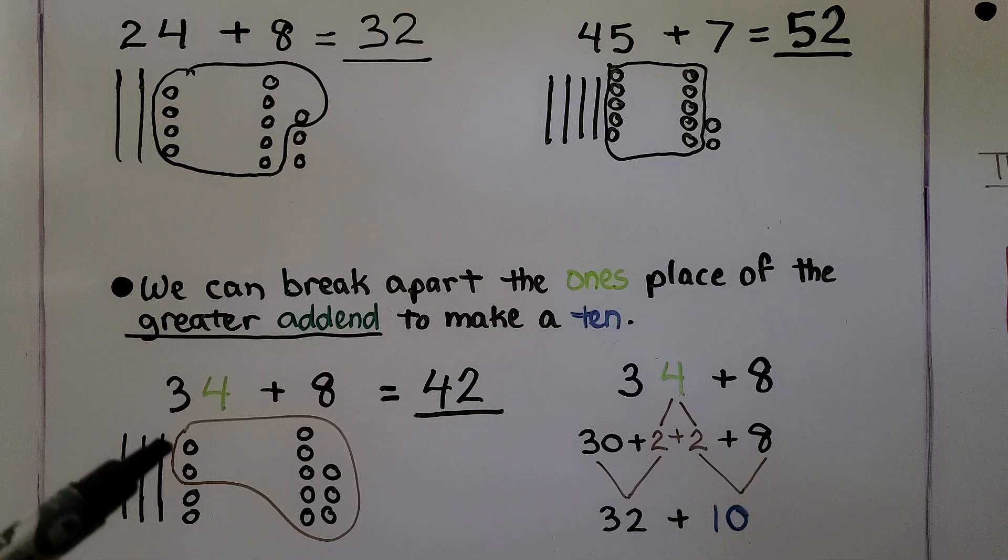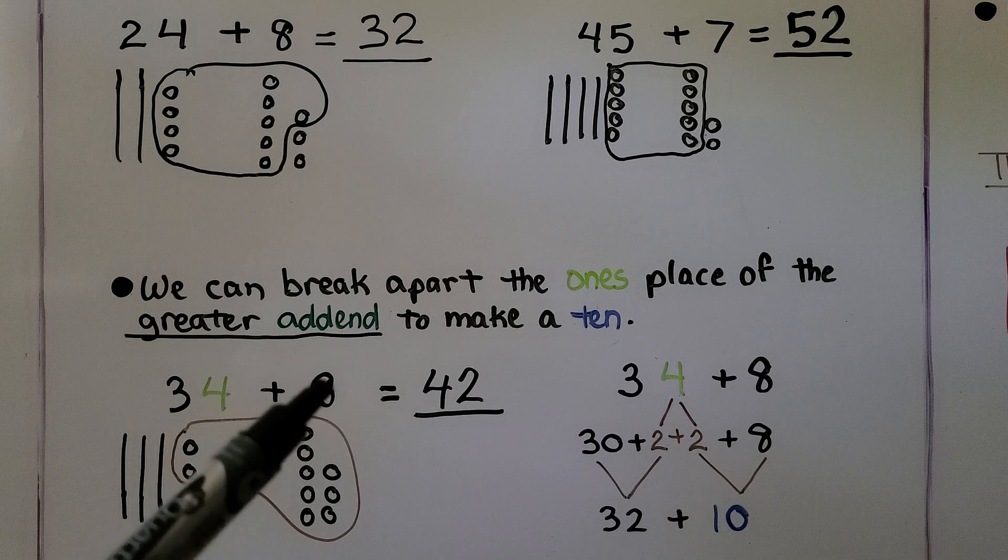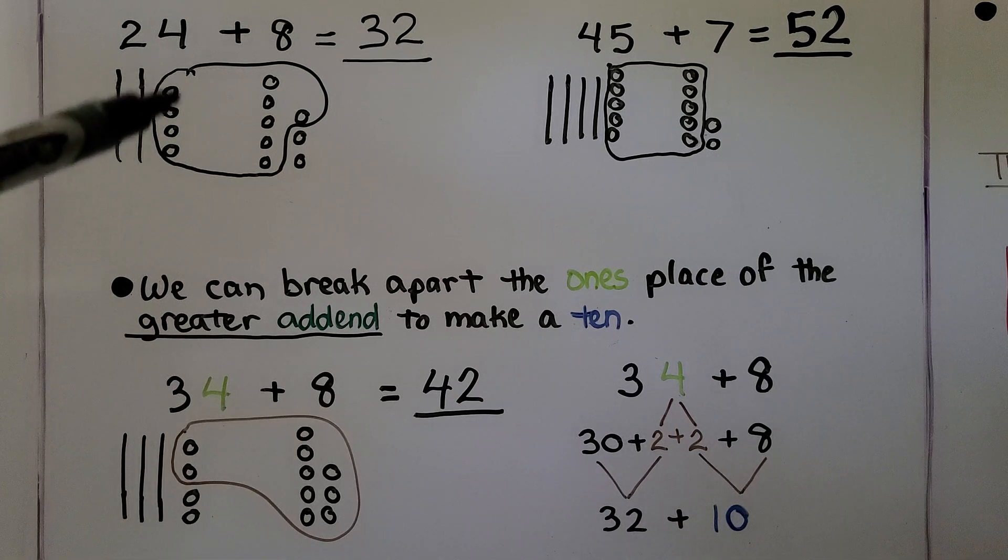Then we add the 3 tens to 1 as 32 and add the other ten. And 32 plus 10 is 42. So we can make a ten from these ones or these ones, but generally we do it with the ones in the greater addend.